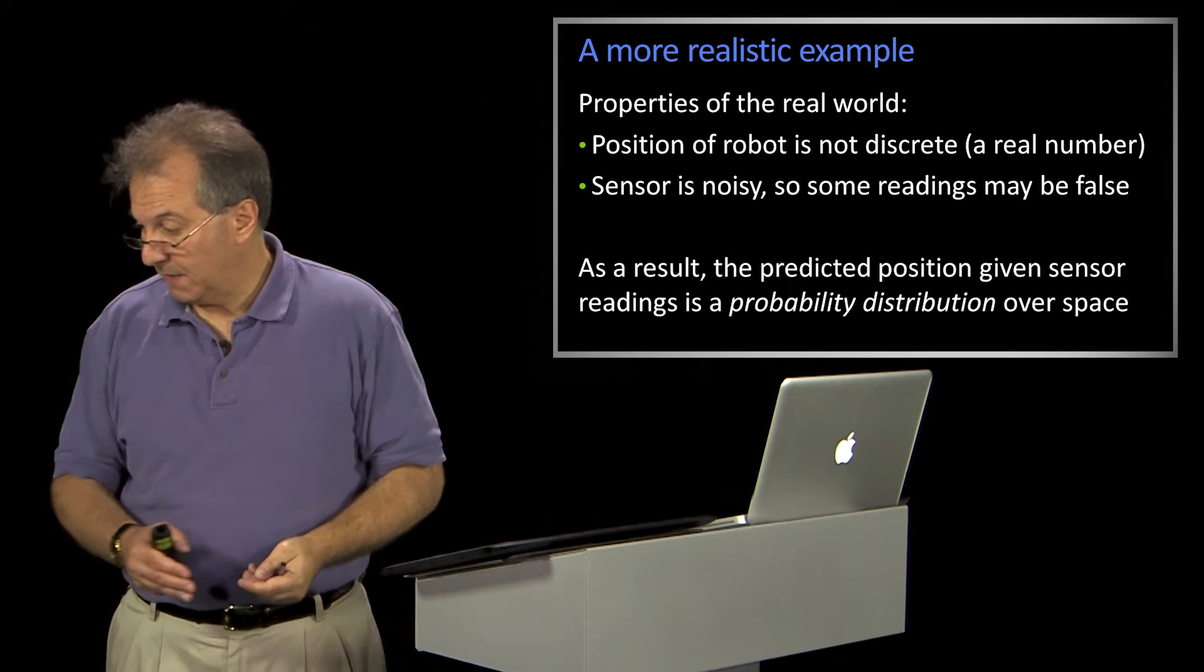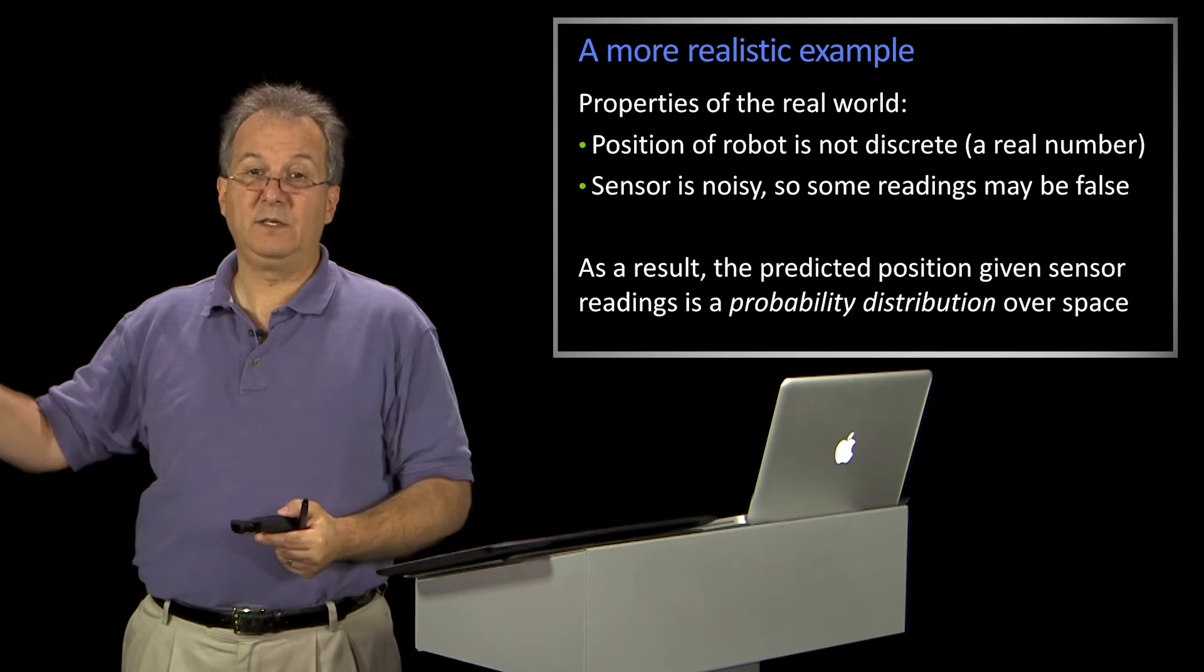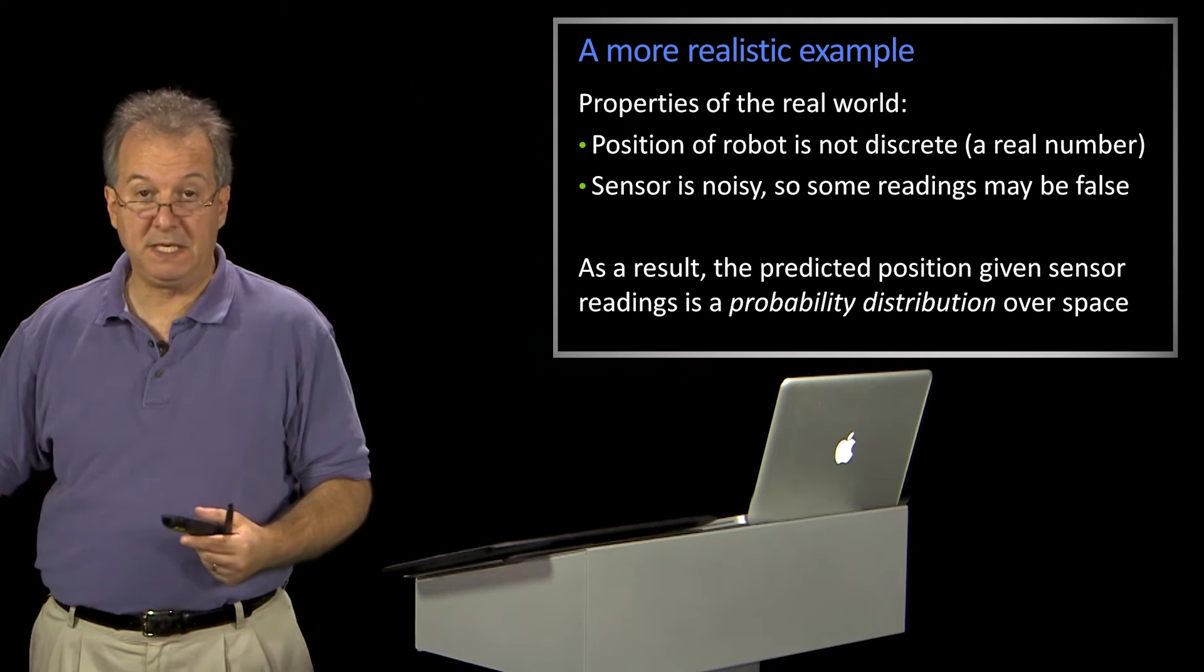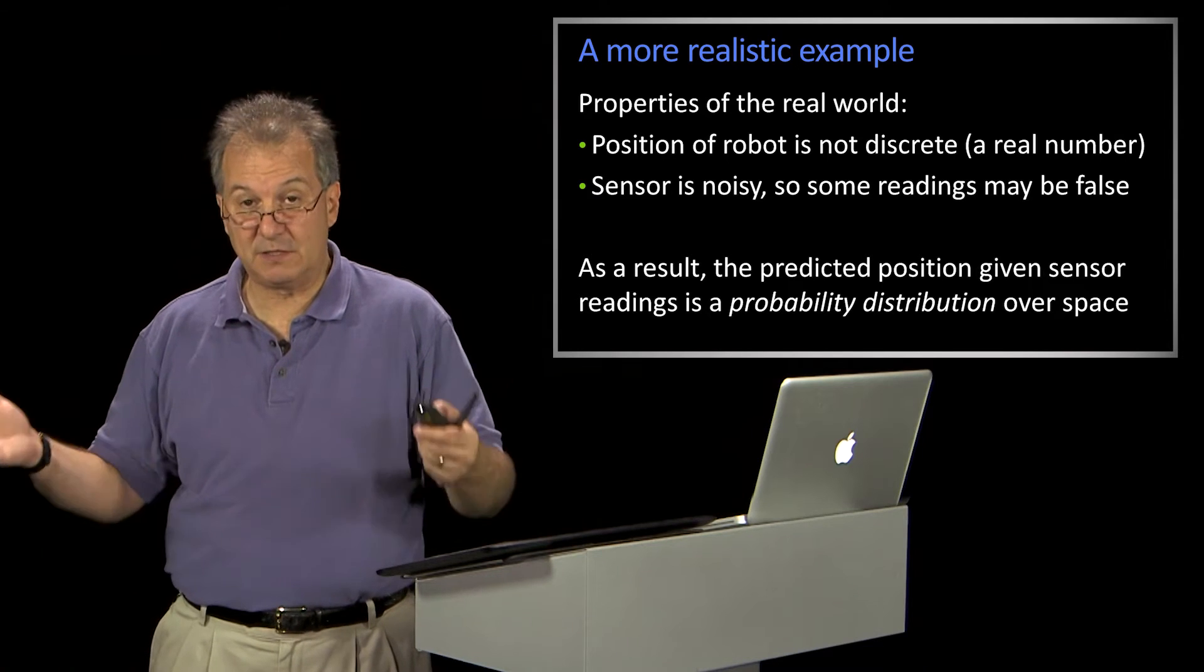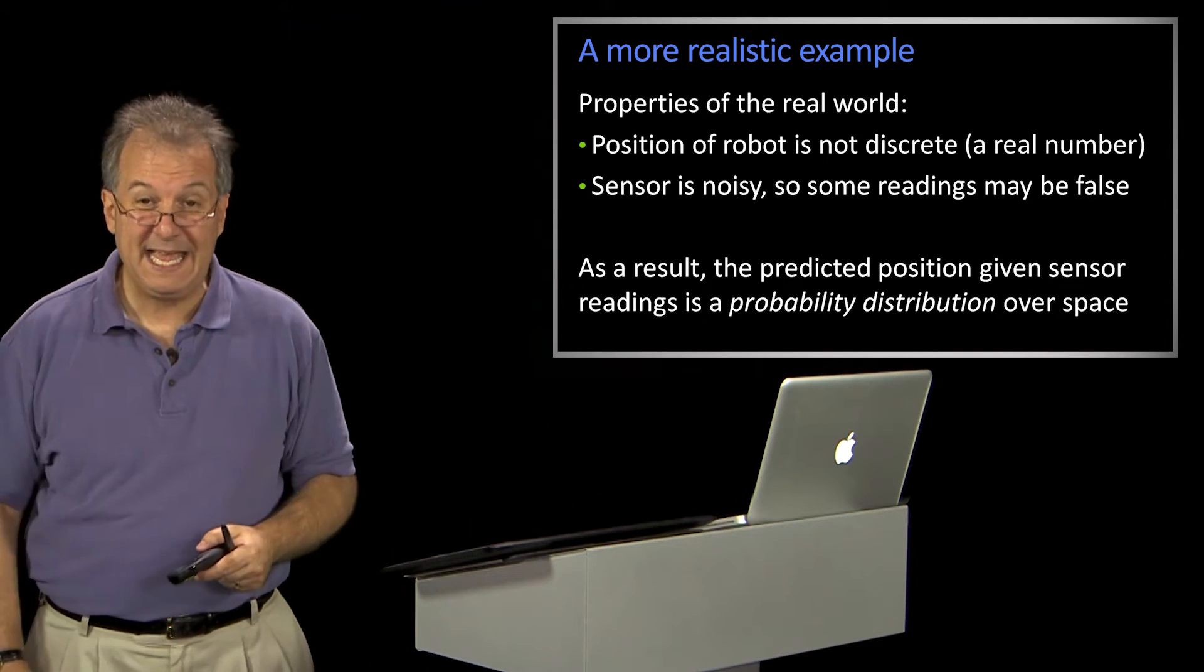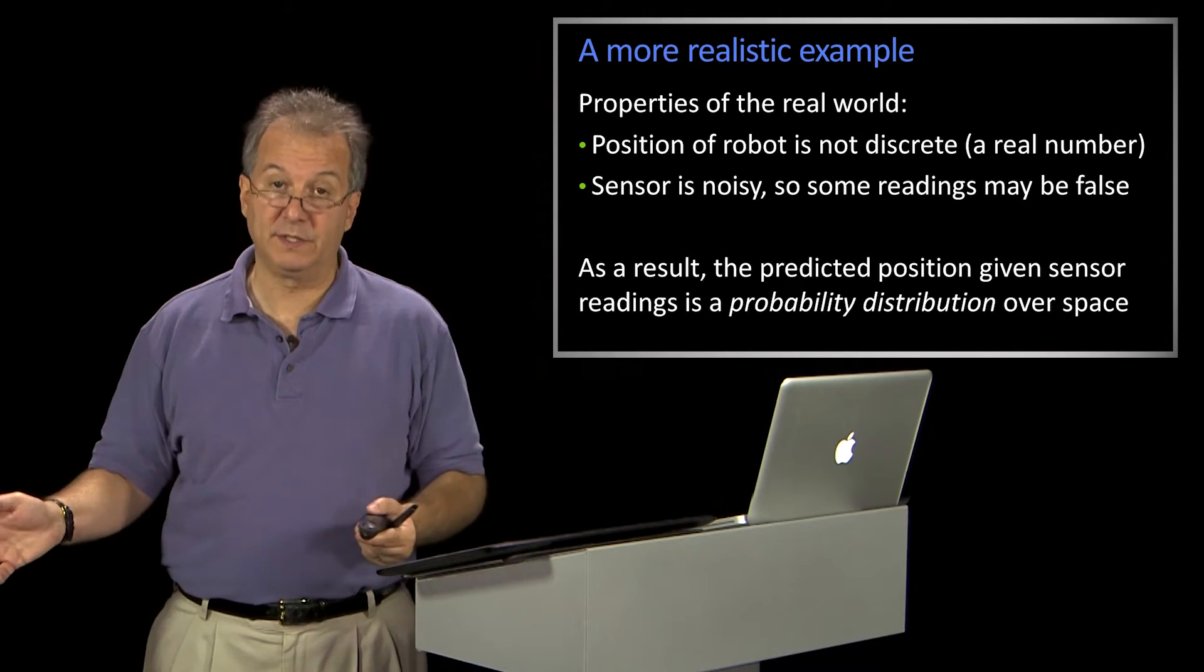And the reason is, first of all, it's going to have some continuous belief about where it thinks it might be. So that's its belief, its distribution, its posterior about where it thinks. And its measurements are noisy.